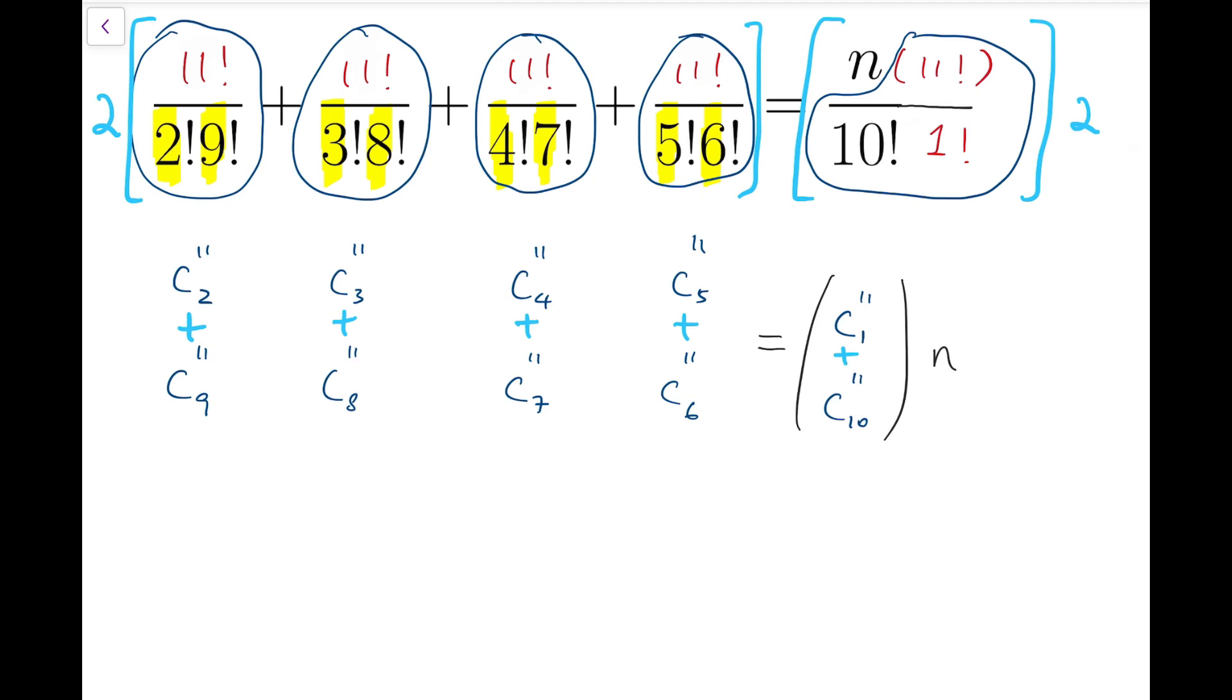Now from the left side, we've actually gathered almost all the binomial coefficients under 11, as in, binomial coefficients of the form 11 choose r. Everything except 11 choose 1, 11 choose 10, 11 choose 0, and 11 choose 11. So we add them on both sides.